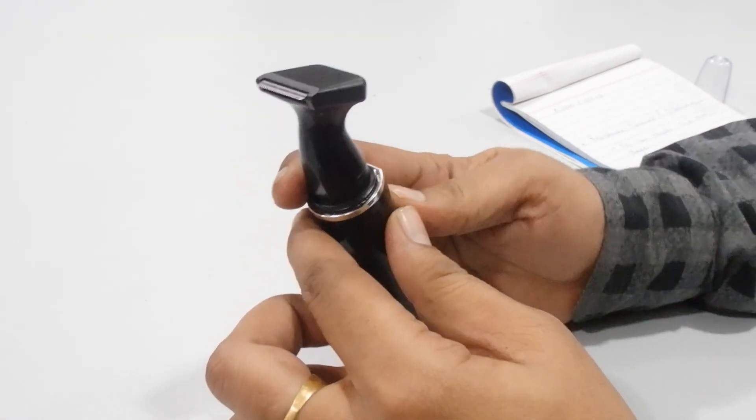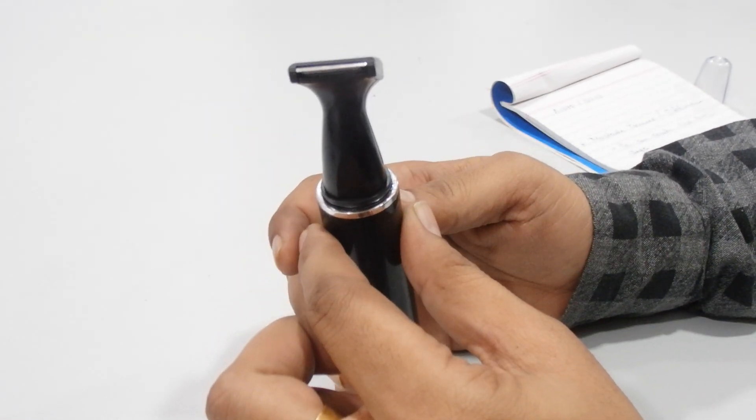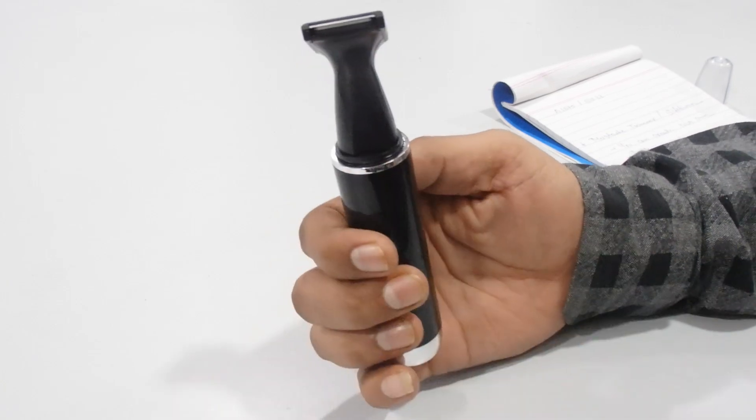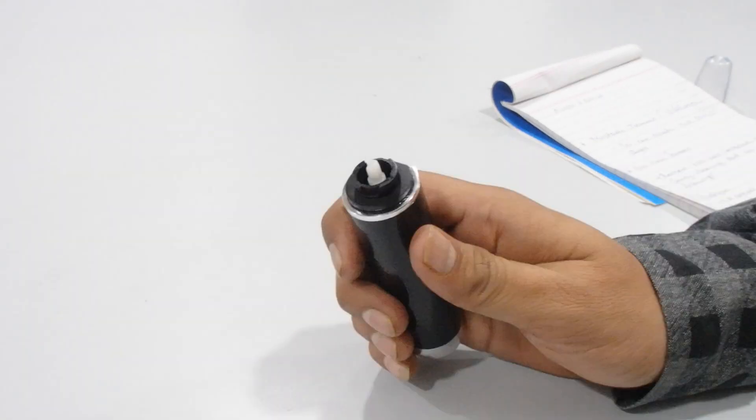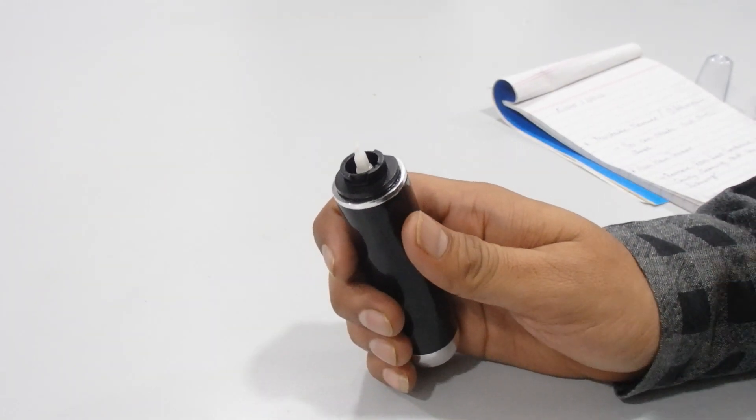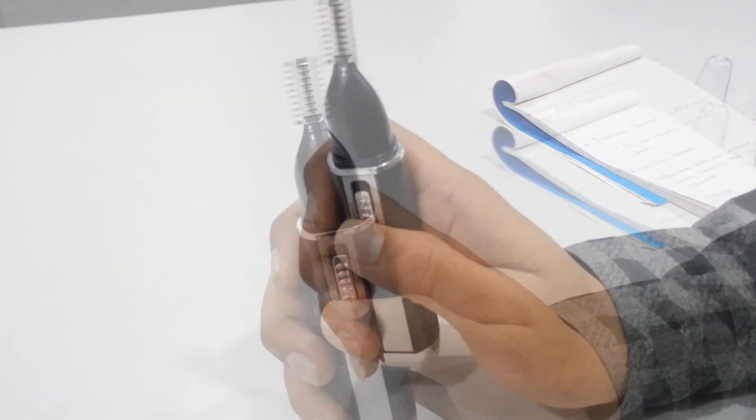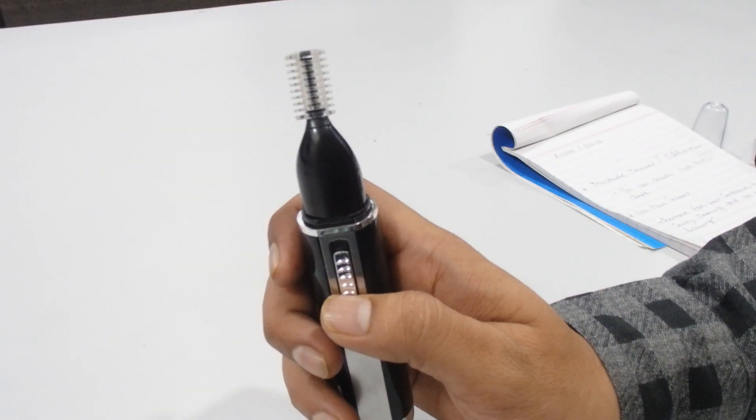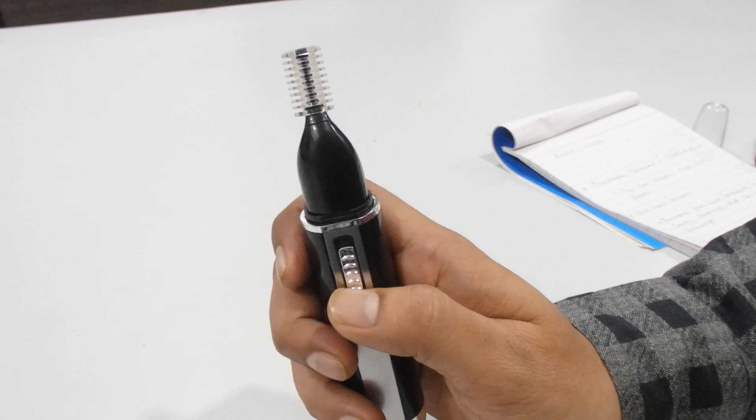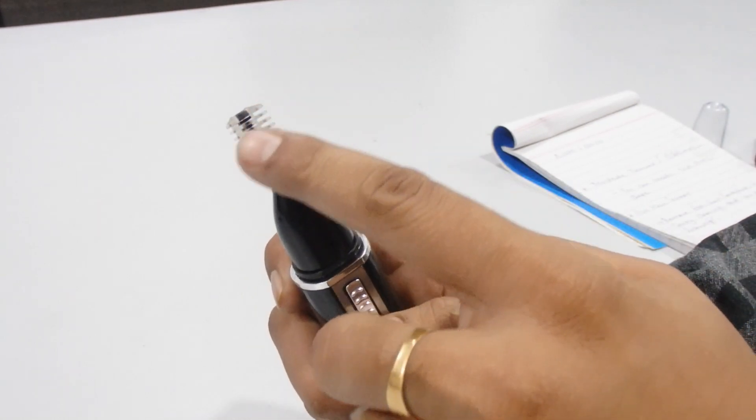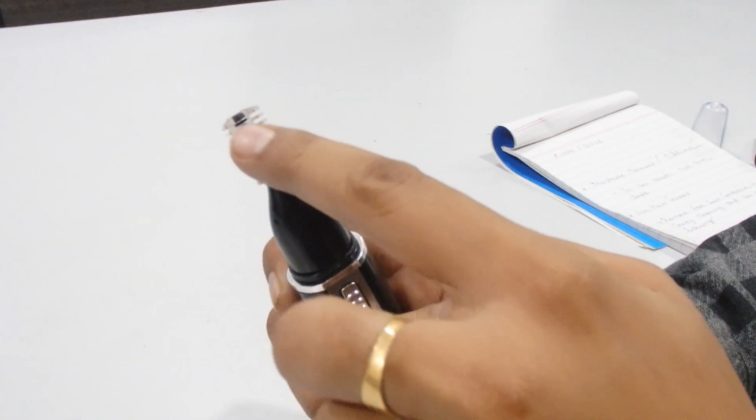Now let's check the eyebrow trimmer. This special eyebrow trimmer can support you with a clean and vibrant face. You need to adjust this point with your eyebrow.